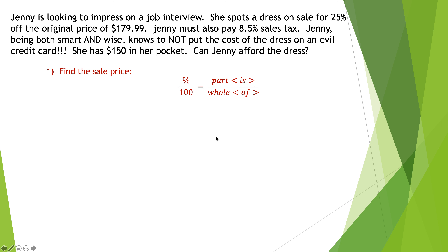As usual, we begin with the percent proportion: percent over 100 equals part over whole. The problem asks for the new price. We've been working on the idea that a percent and its complement add up to 100%. Since the dress is 25% off, I ask: what percent are you going to pay? You're going to pay 75%. So I'm not putting 25 here — I'm putting 75.